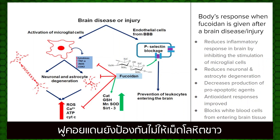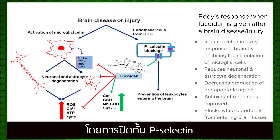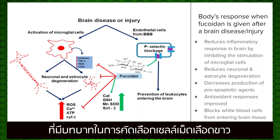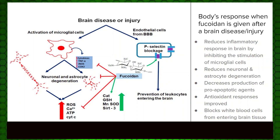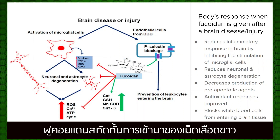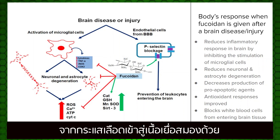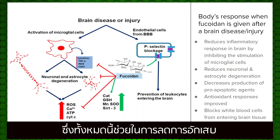Fucoidan also prevents leukocyte, or white blood cell, adhesion to the brain by blocking P-selectin, a protein that plays a role in white blood cell recruitment to the site of injury during inflammation. Fucoidan blocks the entry of leukocytes from the bloodstream into the brain tissue as well, which all helps contribute to the reduction in inflammation.